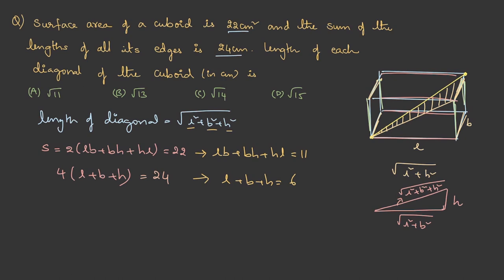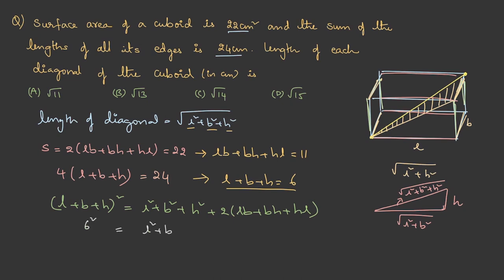To find L² + B² + H², we square (L + B + H): (L + B + H)² = L² + B² + H² + 2(LB + BH + HL). Substituting: 6² = L² + B² + H² + 2(11), so 36 = L² + B² + H² + 22. Therefore L² + B² + H² = 14, and the diagonal is √14 cm, which is option C.